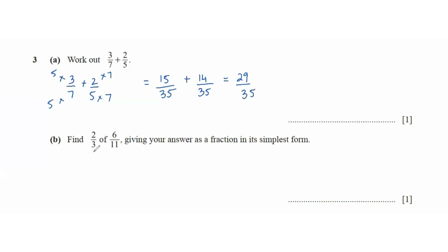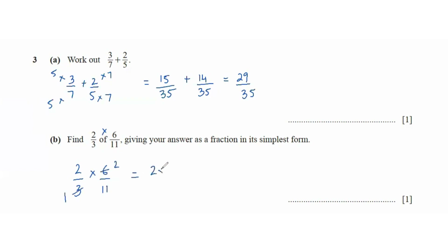Then it says find 2 thirds of 6 over 11, giving your answer as a fraction in its simplest form. '2 thirds of' always means multiplication, so 2 over 3 times 6 over 11. 3 ones are 3, 3 twos are 6. So that simplifies to 2 times 2 over 11, which is 4 over 11.